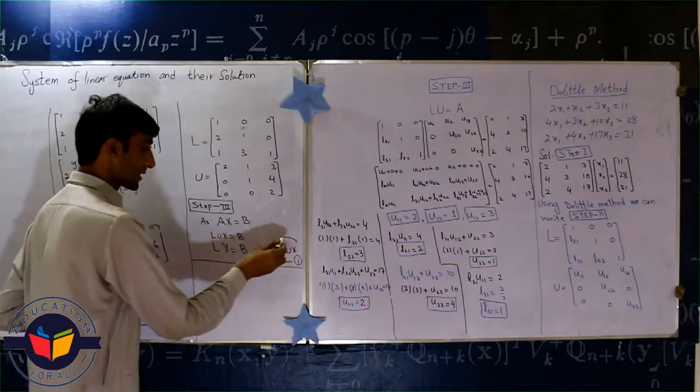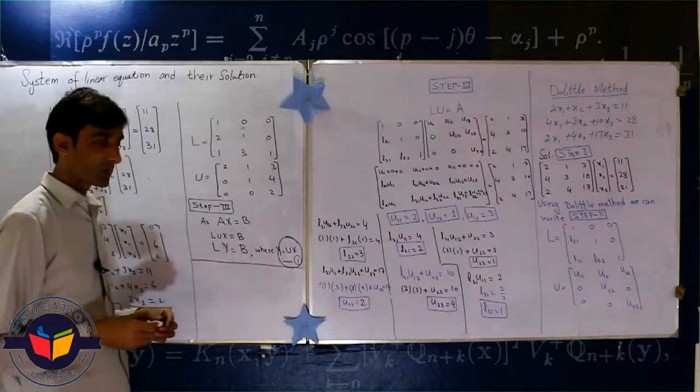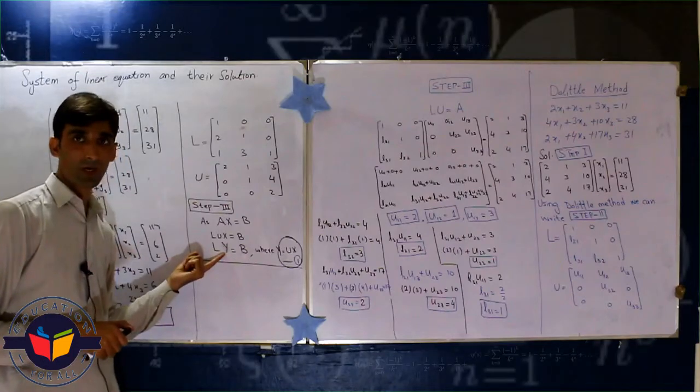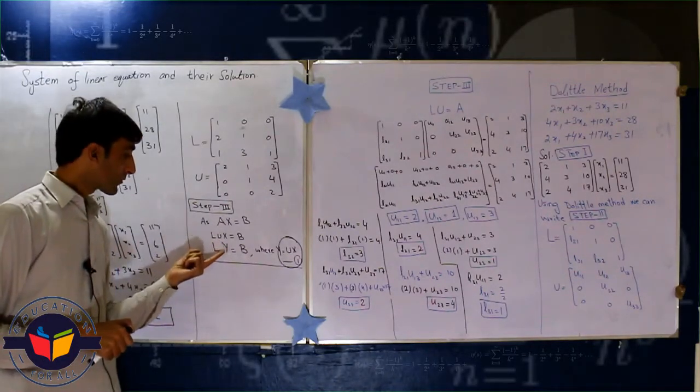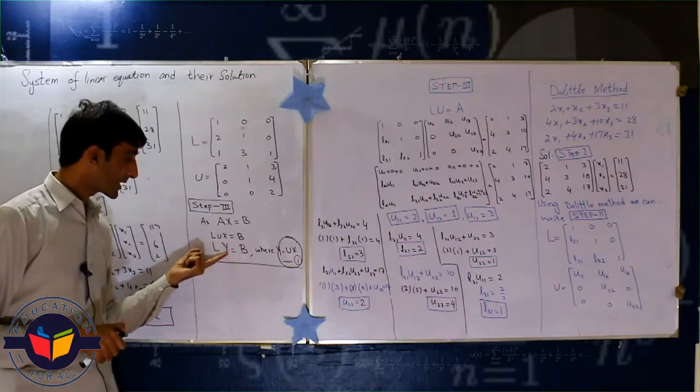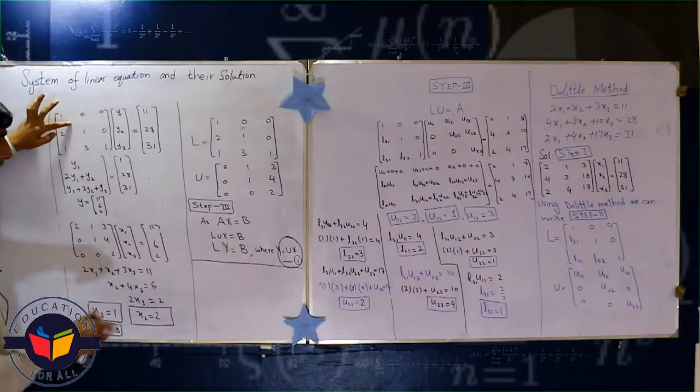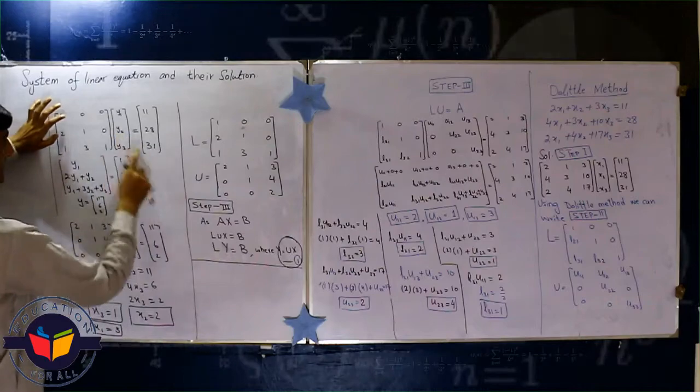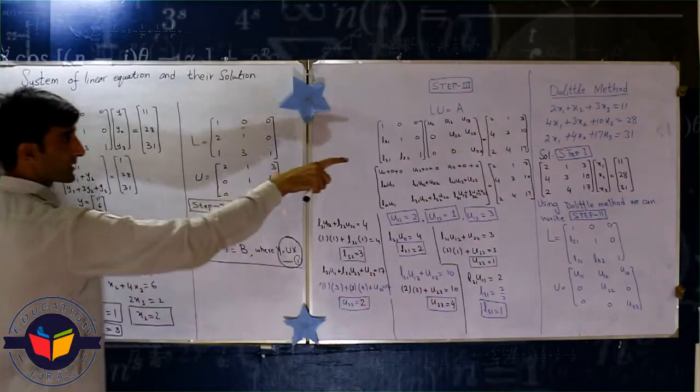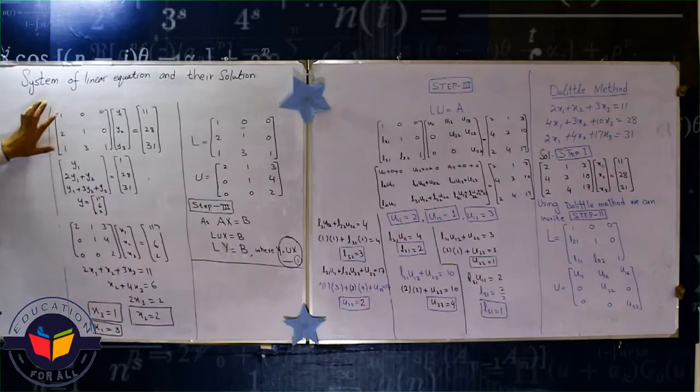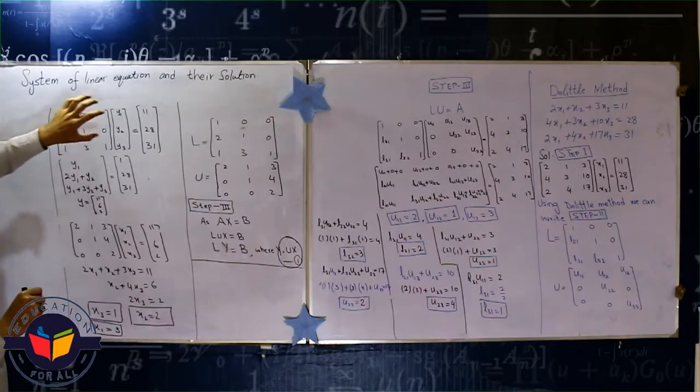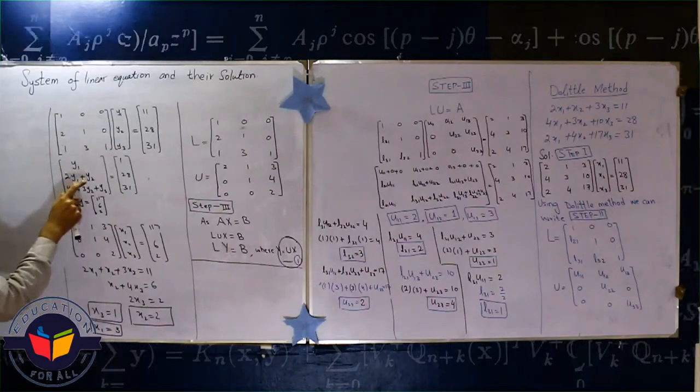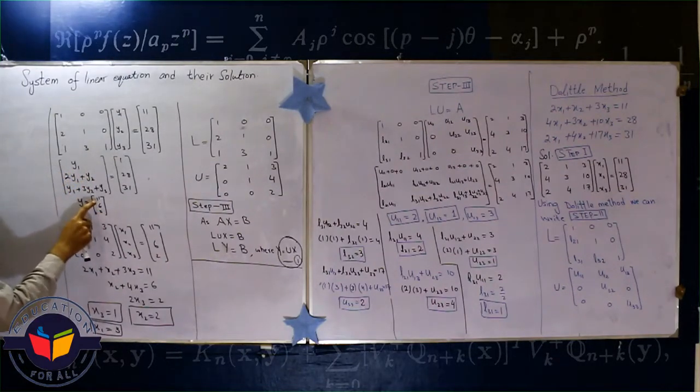This is equation one. This part is equation one. Now we want to find the value of Y. For the value of Y we write this equation in this form. Here the value of L is this, Y is this, and B is taken from first. Now we multiply this value with this one and after comparing we get the value of Y1, Y2, and Y3, that is 1, 6, and 2.